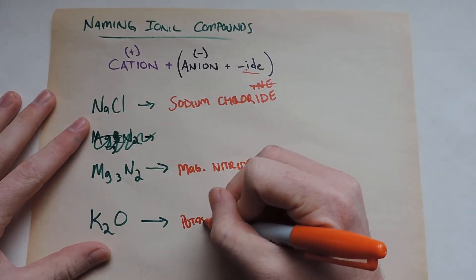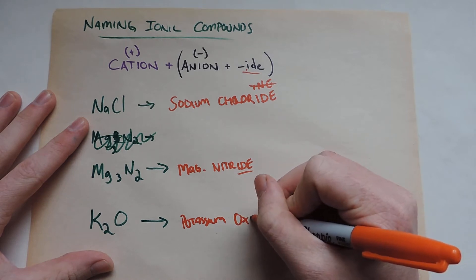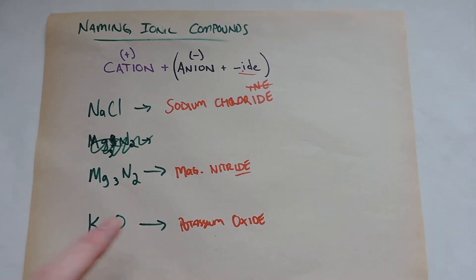And this is going to be potassium oxide. So that's how you do these very easy. This is a metal with a non-metal.